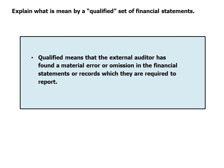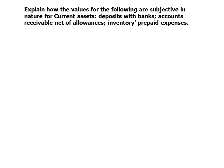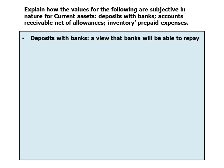Moving on to subjectivity: explain how the values for the following are subjective in nature — current assets including deposits with banks, accounts receivable net of allowances, inventory, and prepaid expenses. For deposits with banks, we've had the example of Icelandic banks where international depositors struggled to get their funds back, so the value here is dependent on management's view that the banks will be able to repay.